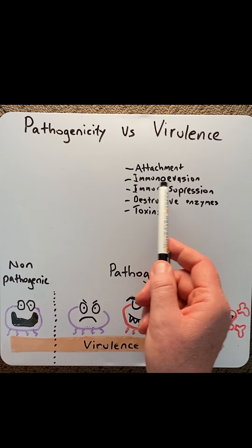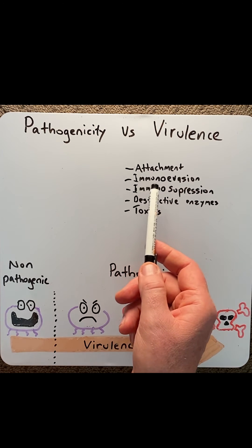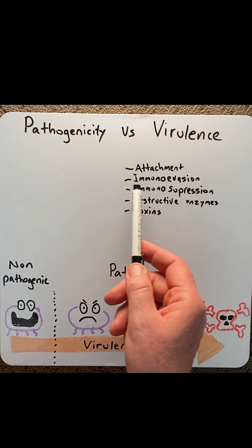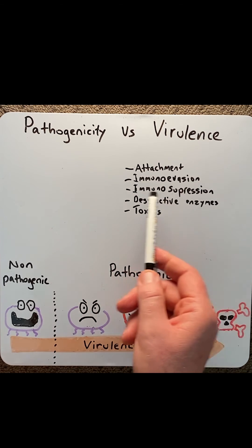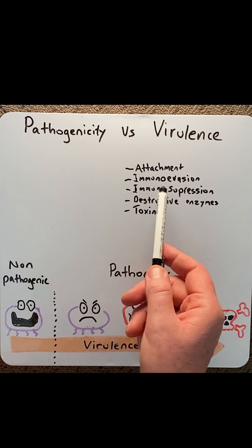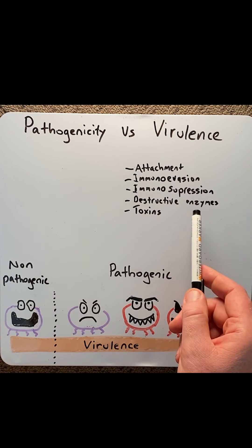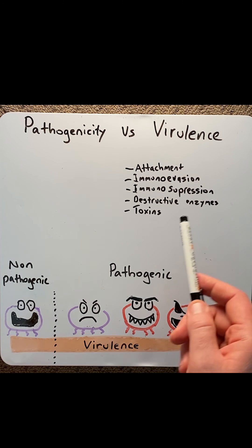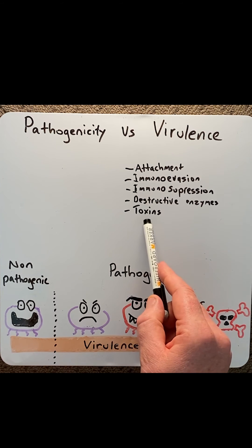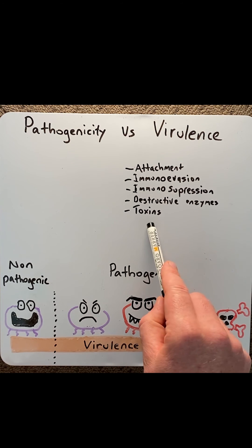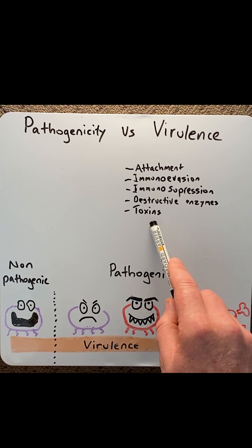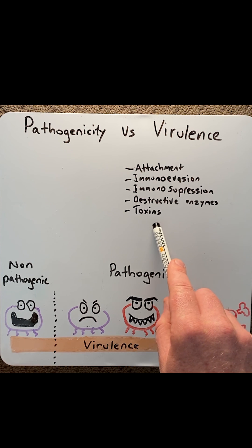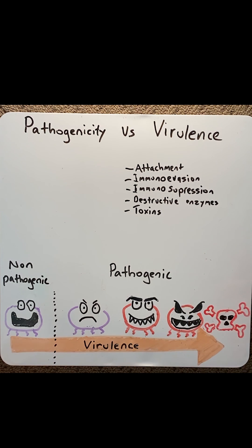Some microorganisms have immuno-evasive properties, such as capsules — they can put capsules around themselves to stop the immune system from phagocytosing them. Some can produce immunosuppression, such as breaking down antibodies. Some can produce destructive enzymes, allowing them to break through connective tissue or break down red blood cells. And some microorganisms can produce toxins, such as endotoxins, which can cause septic shock, and exotoxins, which are destructive to nerves, such as in tetanus.